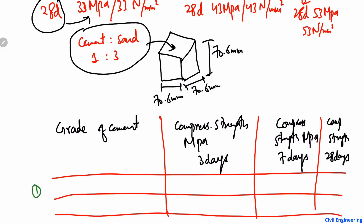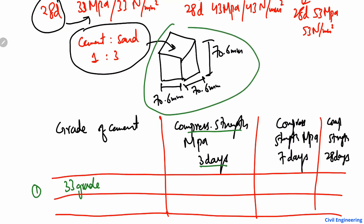For the 33 grade of cement, the compressive strength at 3 days is 16 MPa, at 7 days it becomes 22 MPa, and the compressive strength reaches 33 MPa at 28 days.